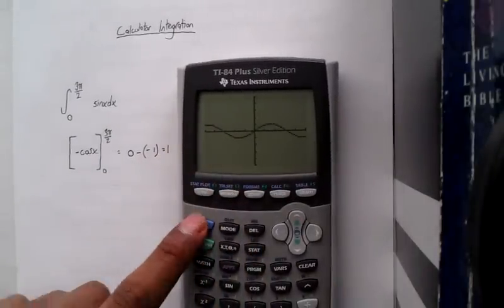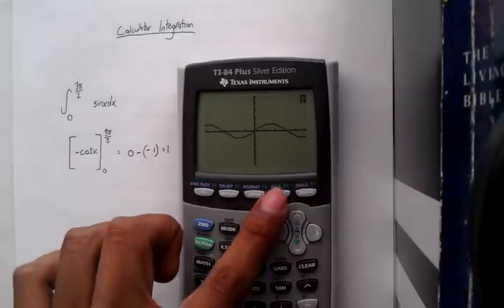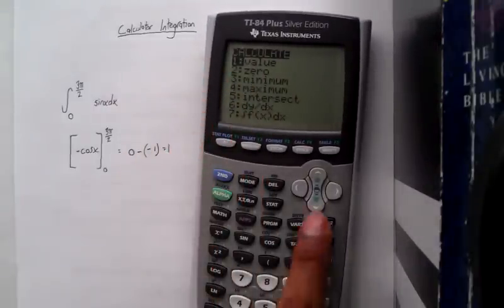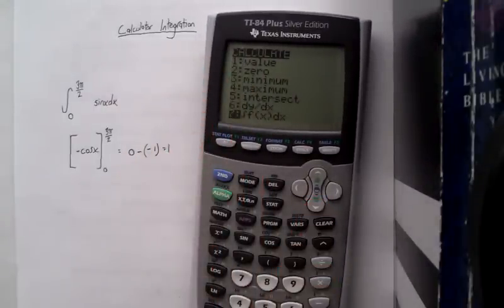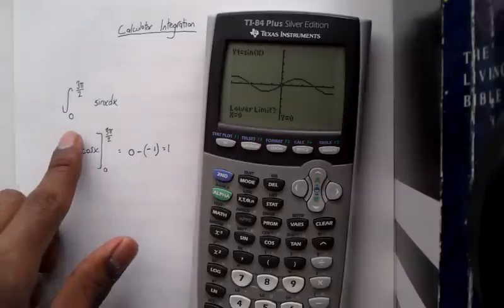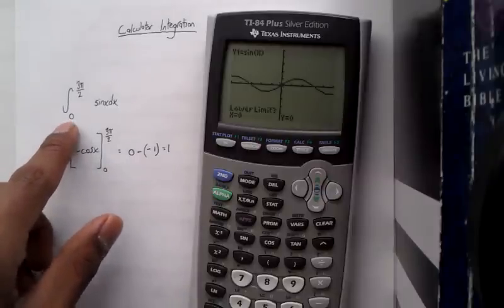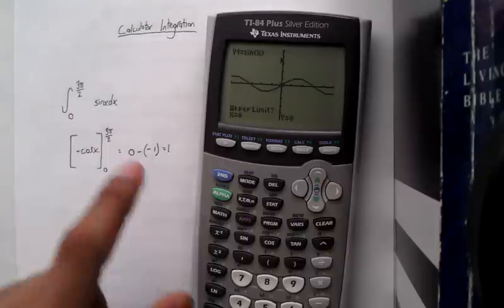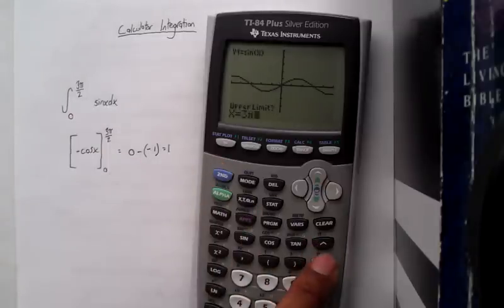If you hit 2nd, calculate, and then go down to number 7, you can actually take the integral. Your lower limit would be 0, and then your upper limit in this case would be 3 pi over 2.